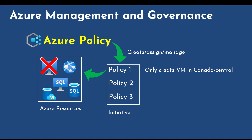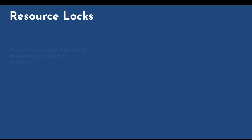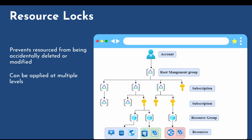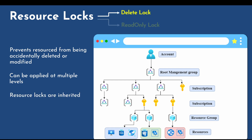A group of policies is called an initiative, and you can assign both policies and initiatives. The next topic is resource locks. A resource lock prevents a resource from being accidentally deleted or modified. It can be applied at multiple levels — subscription level, resource group level, or at individual resource level — and these resource locks are inherited in nature. That means if you apply it at the subscription level, it is inherited by child nodes such as resource groups and resources. There are two types of resource locks: delete lock and read-only lock. With a delete lock, you can read and modify the resource. With a read-only lock, you can only read the resource — you cannot modify or delete it. A read-only lock is just like a reader role in Azure.